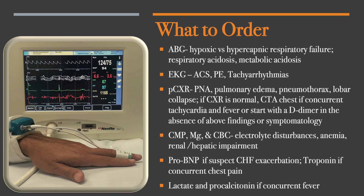Portable chest x-ray: does it demonstrate pneumonia, pulmonary edema, pneumothorax, or lobar collapse? If the chest x-ray is normal, you want to rule out PE. You can start with a D-dimer and use D-dimer calculations on MDCalc to determine whether you need to get a CTA chest to rule out PE.